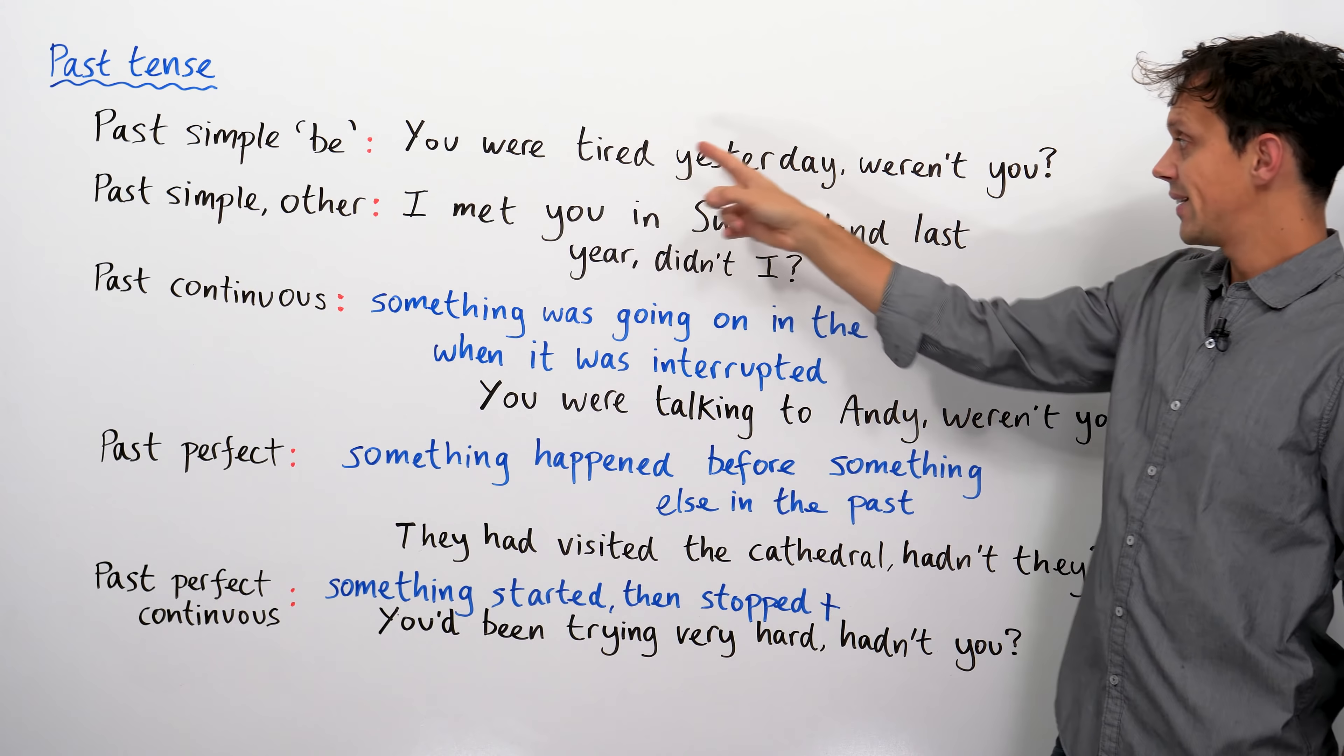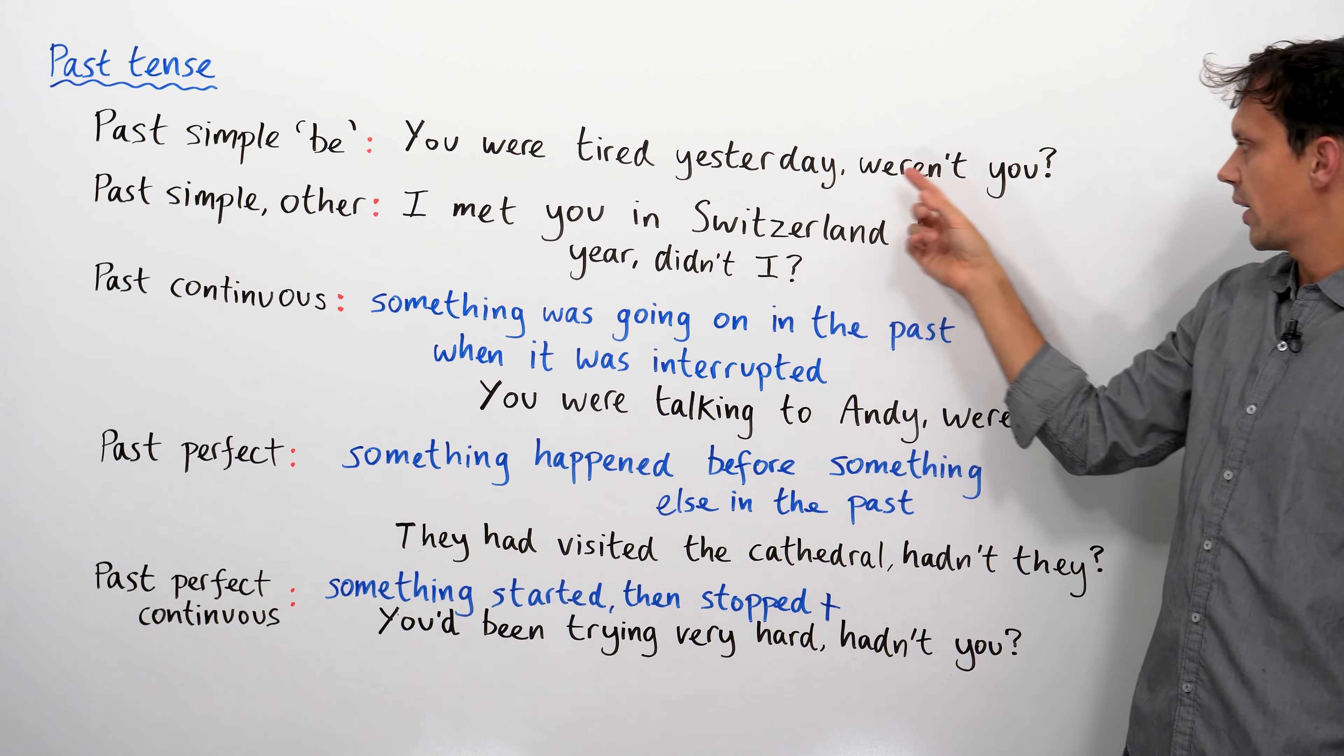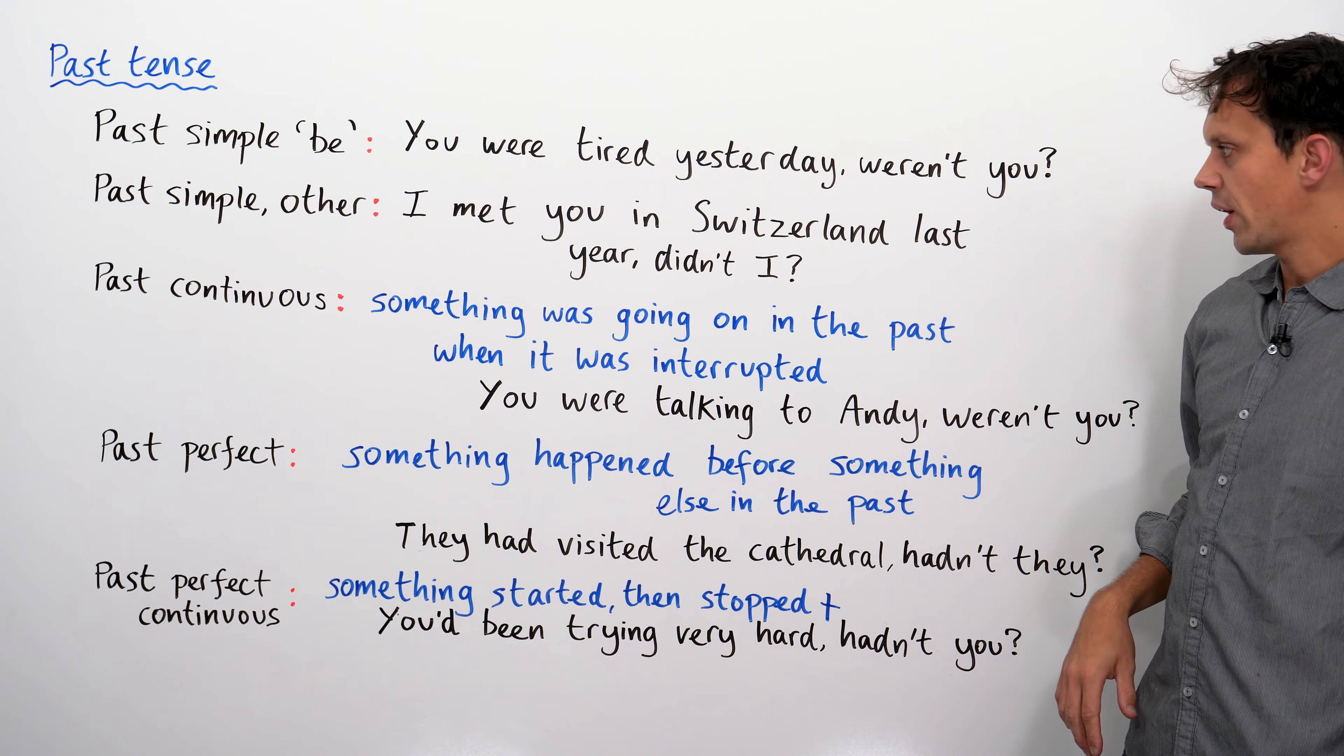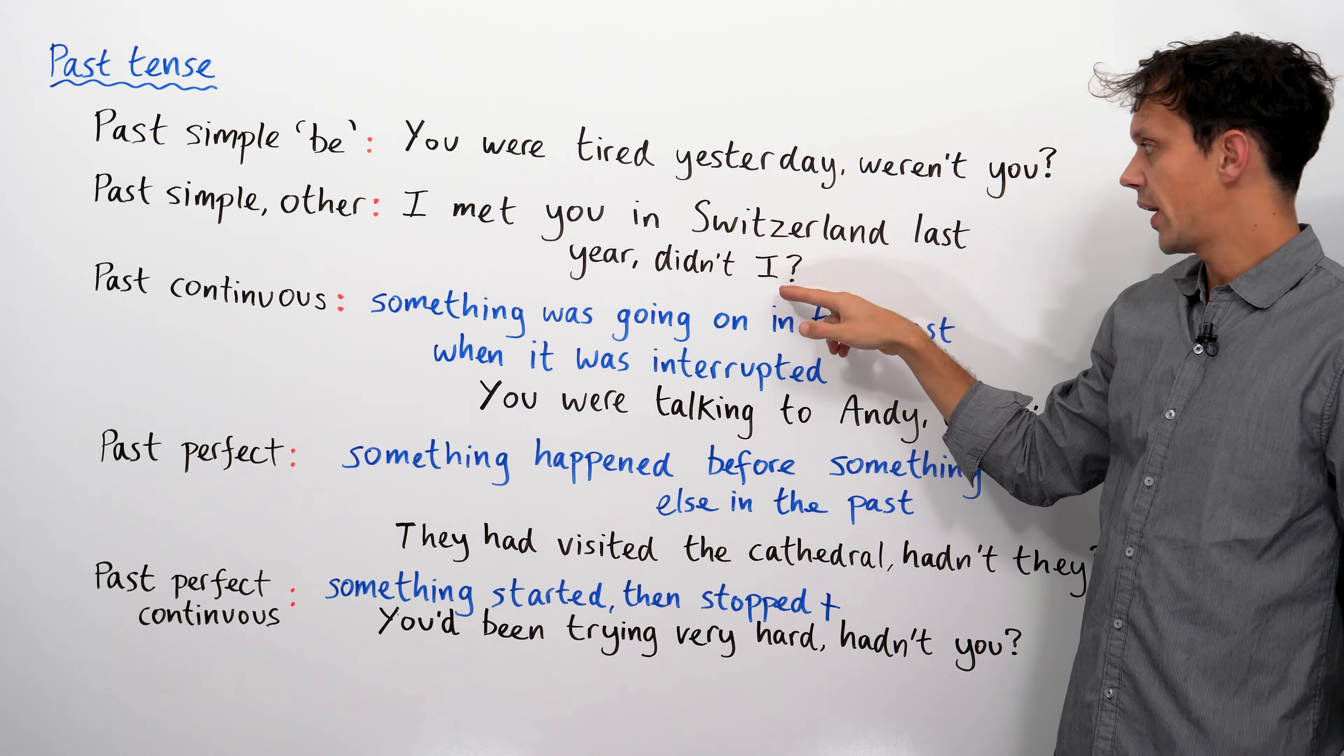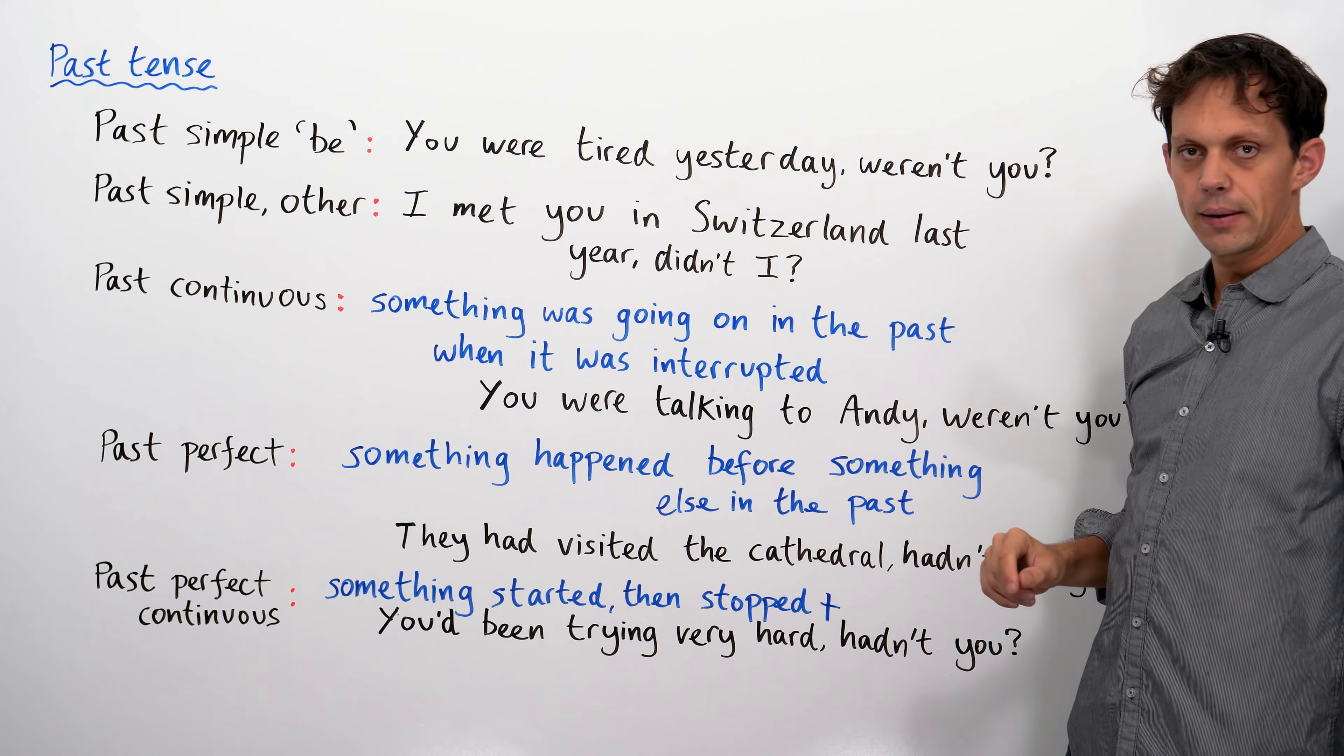Right, let's have a look at the past simple with the verb to be. You were tired yesterday, weren't you? Just to go through the conjugations. I was tired yesterday, wasn't I? We were tired yesterday, weren't we? They were tired yesterday, weren't they? He was tired yesterday, wasn't he or she? Past simple with most other verbs. I met, past participle, you in Switzerland last year, didn't I? She met you in Switzerland last year, didn't she? We met in Switzerland last year, didn't we? You get the idea.